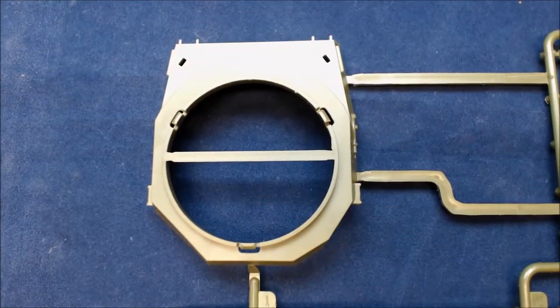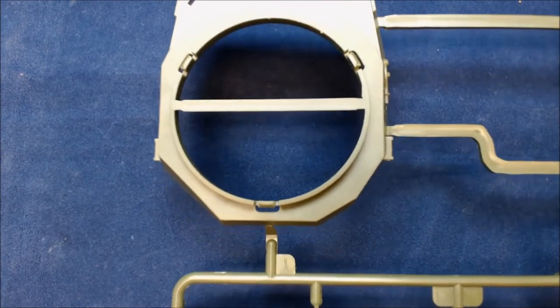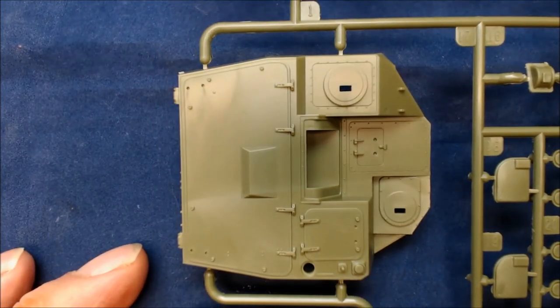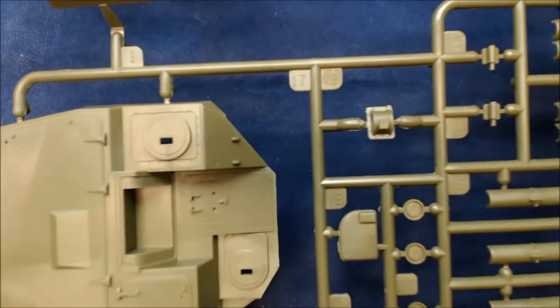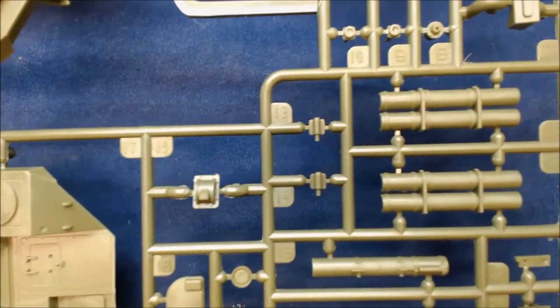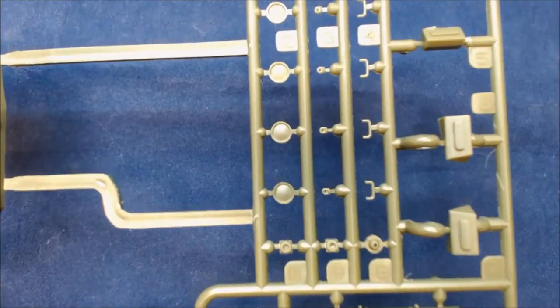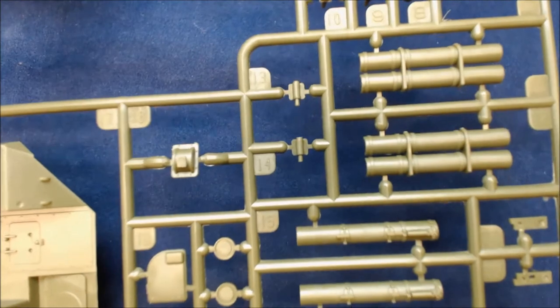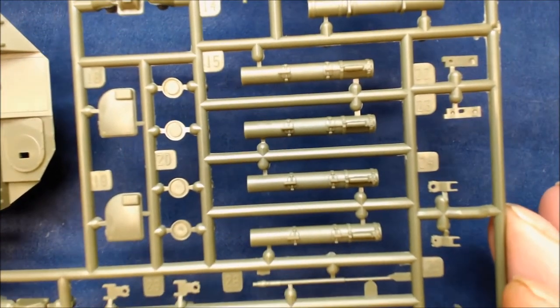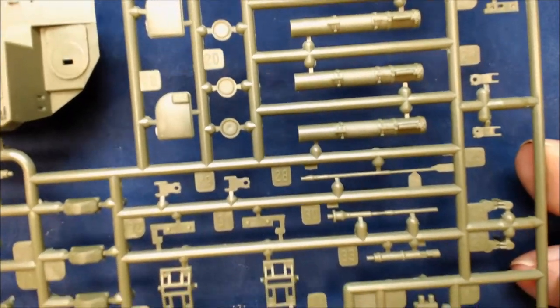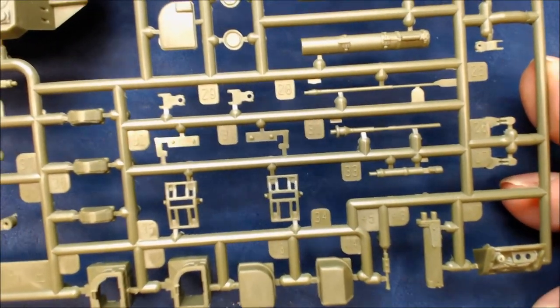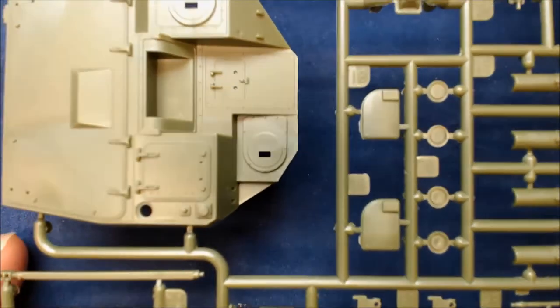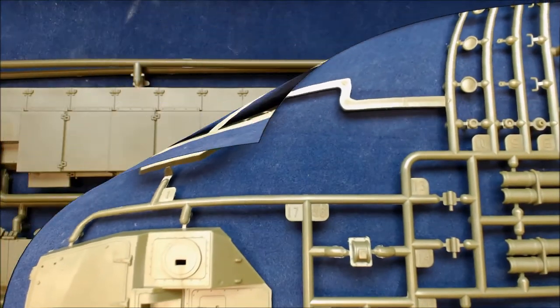Okay, this is sprue E. And this contains most of the turret. All nice and clean, nice and sharp. As you can see, all the detailing. No flash as I can see. So right to the end of that. Rocket pods. As I say, all nice and clean. I haven't come across any flash and everything looks pretty crisp. So that is sprue E.